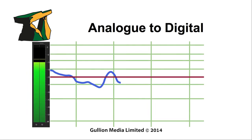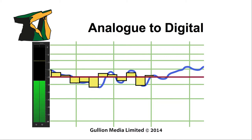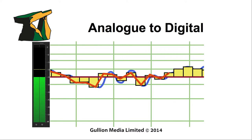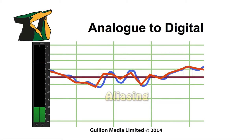If samples were made at less than twice the highest frequency, distortion could occur with certain frequencies. This is called aliasing.